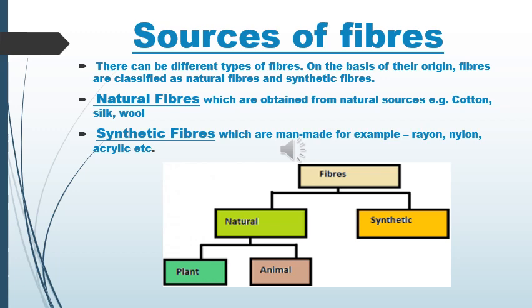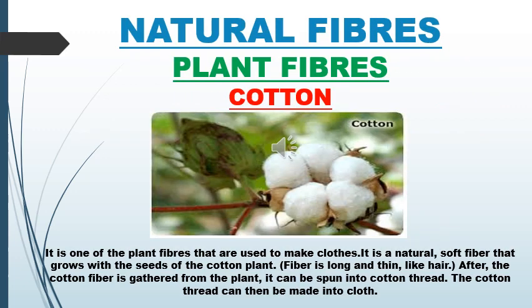Natural fibers are divided into two groups: plant fibers and animal fibers. The fibers that we get from plants are called plant fibers, and the fibers we get from animals are called animal fibers. Here we are discussing plant fibers. Cotton: The cotton plant bears light and fluffy cotton balls which burst open. These cotton balls have thin fibers in them. After cotton fiber is gathered from the plant, it can be spun into cotton thread, and the cotton thread can then be made into cloth.